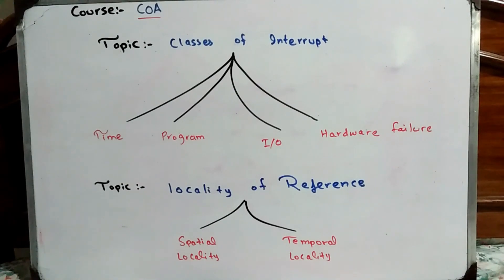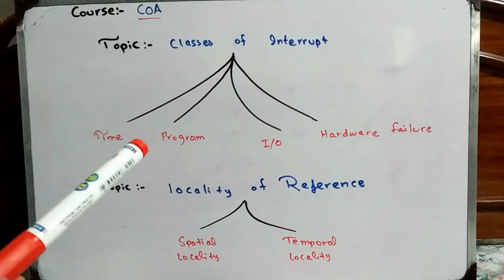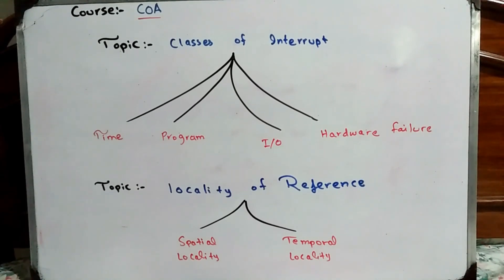The second class of interrupt is program interrupt. Program interrupt occurs when your program's size exceeds the memory size, meaning you cannot store the program in memory. Then you have to divide the program into portions to store it in memory.